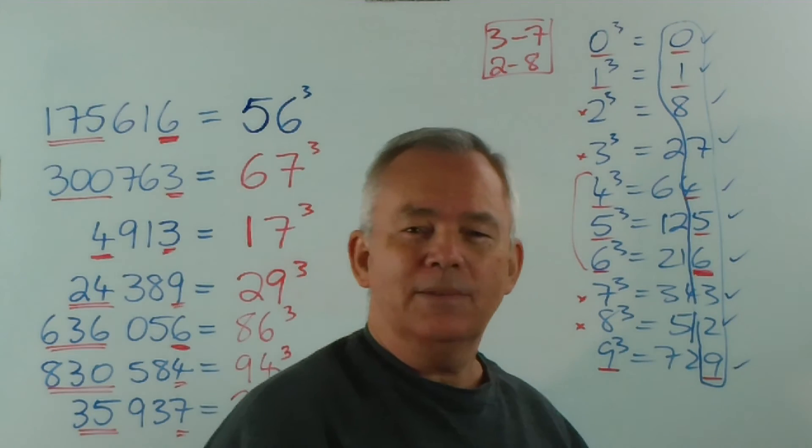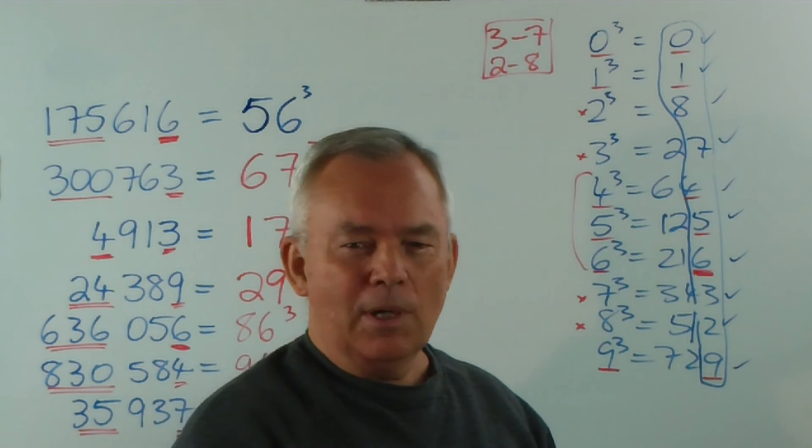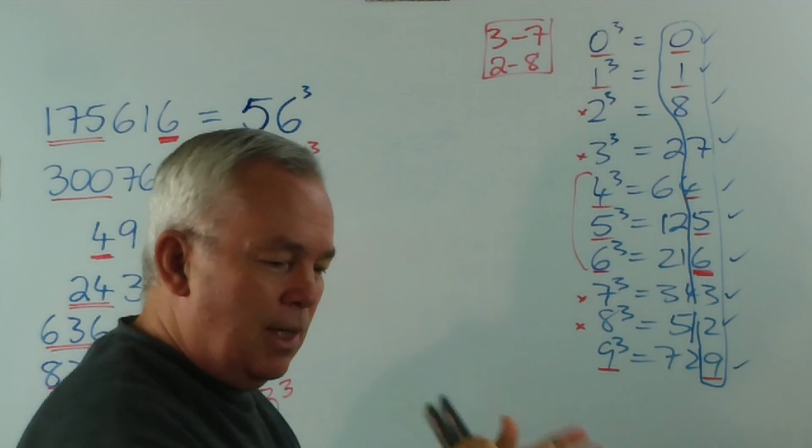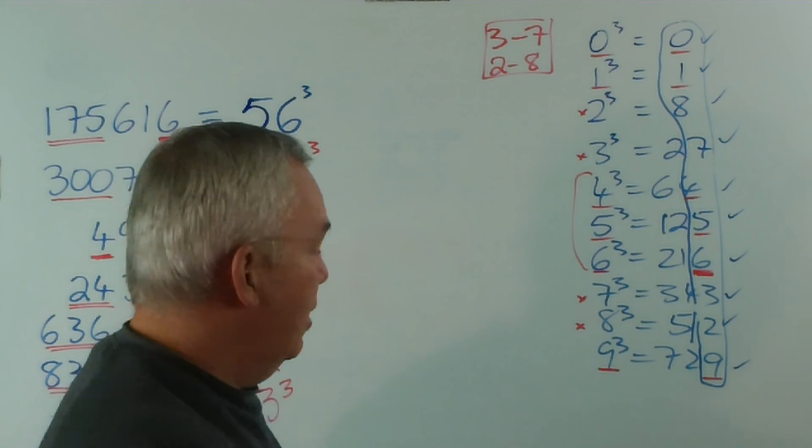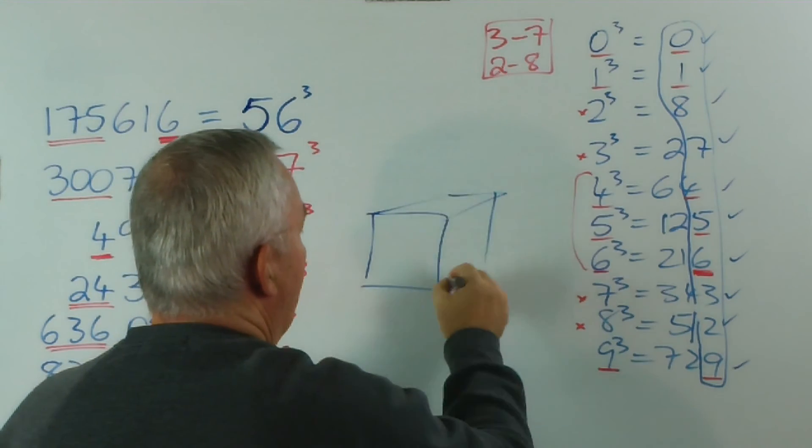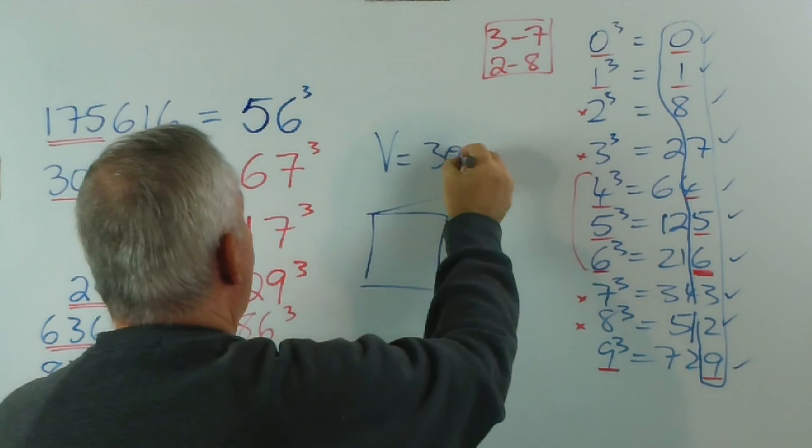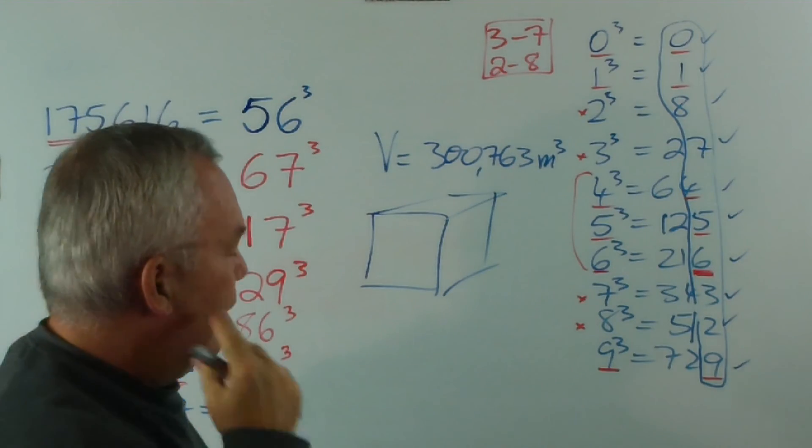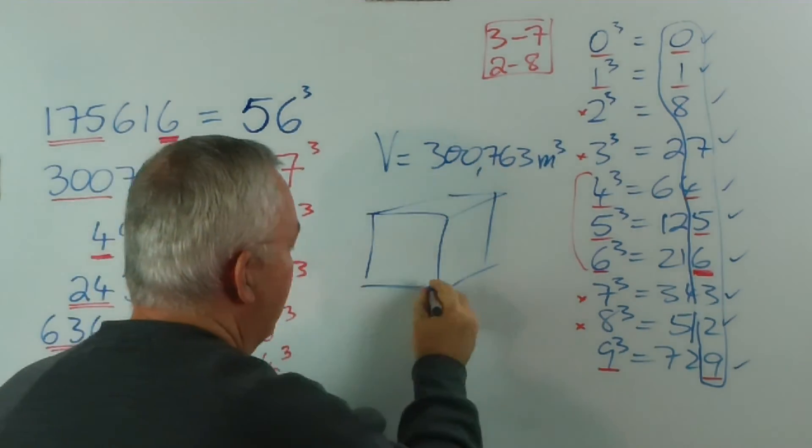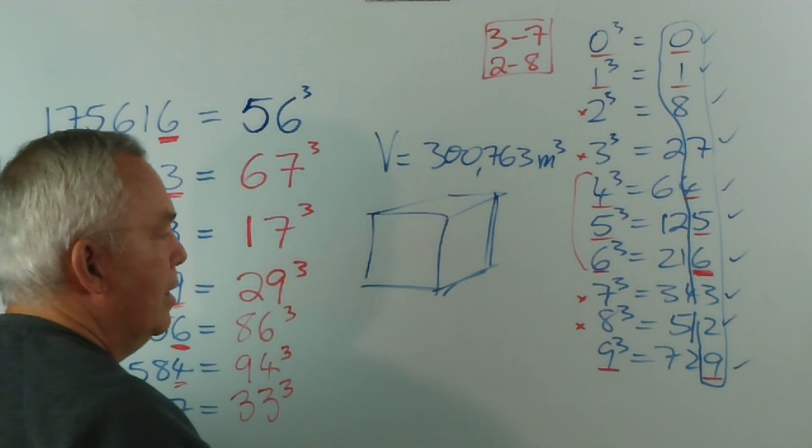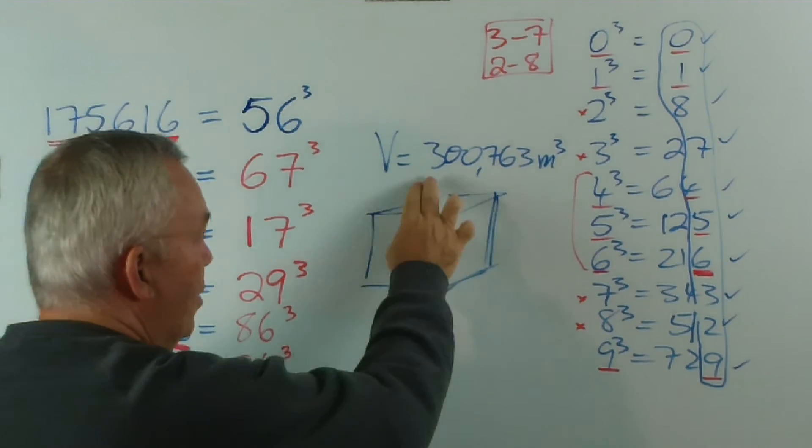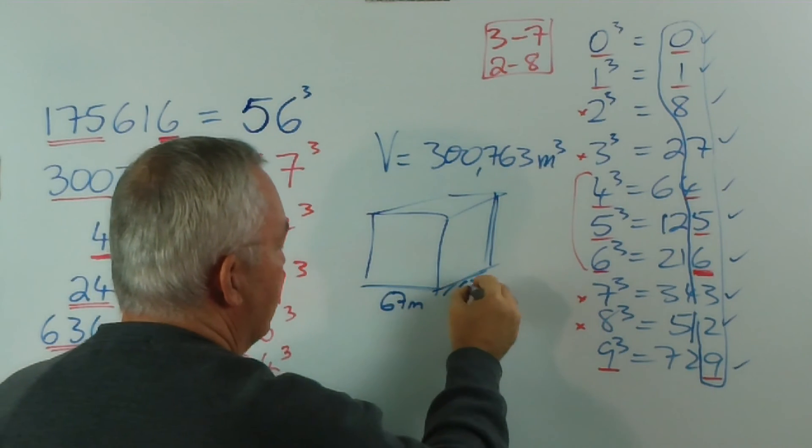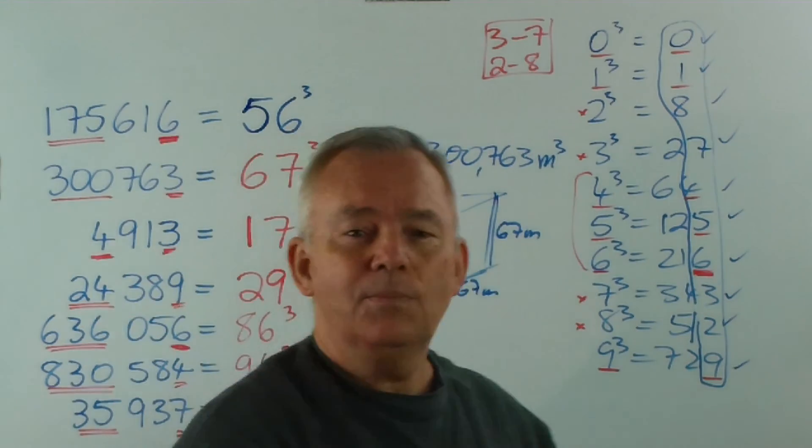Of course, if you have a calculator in a classroom, you'll probably do that quite rapidly. But, there are occasions when you might just, because of the nature of the question, know that it's a perfect cube. For example, you're asked, here's a question, you're told, you're told the cube has a volume of, let's say, three hundred thousand seven hundred and sixty-three cubic metres. And, for some reason, you know that the length of each side is a whole number of metres. So, if you know that's a perfect cube, we've just solved that, and you would know that this was 67 metres by 67 metres by 67 metres. Pure and simple.